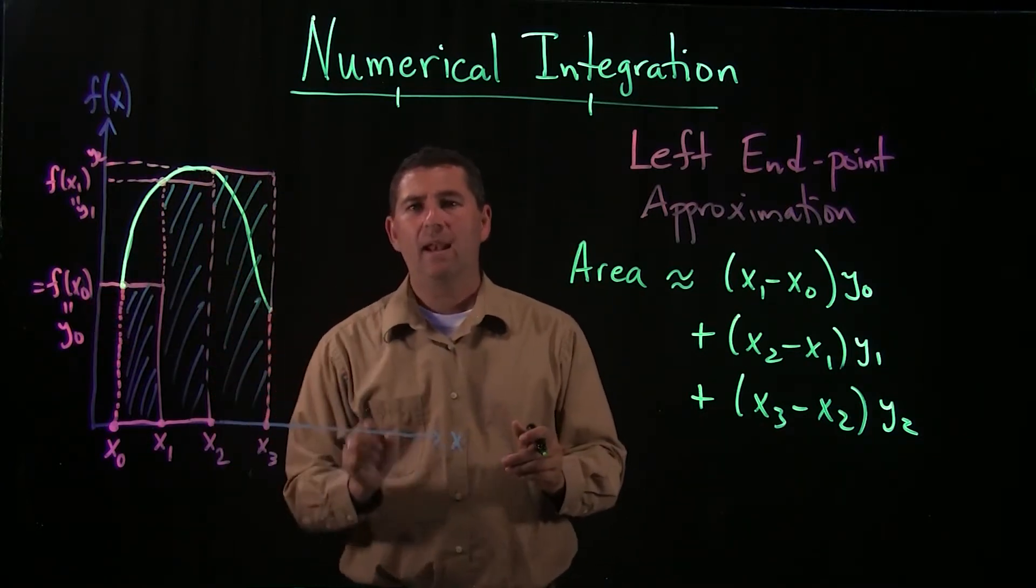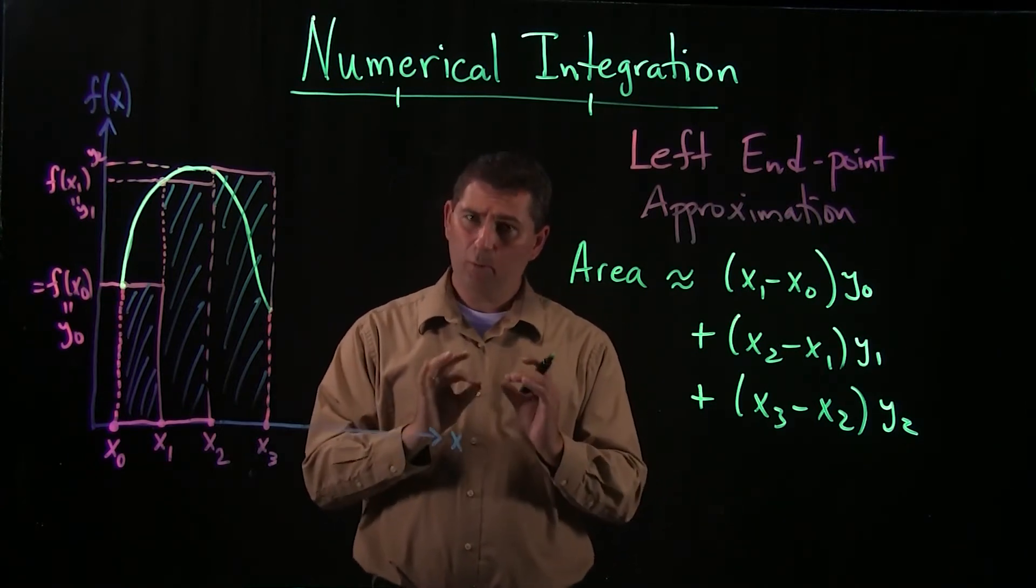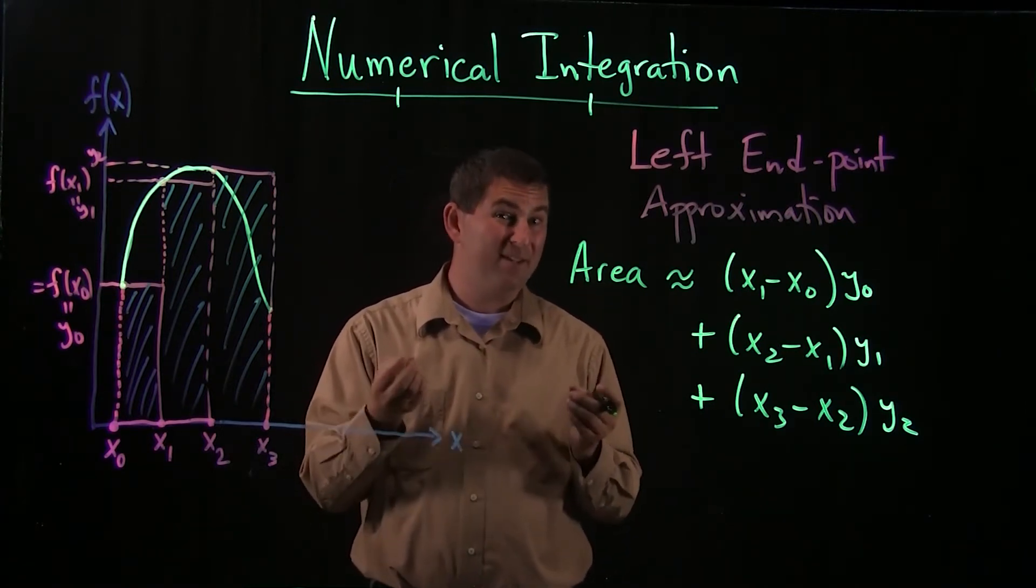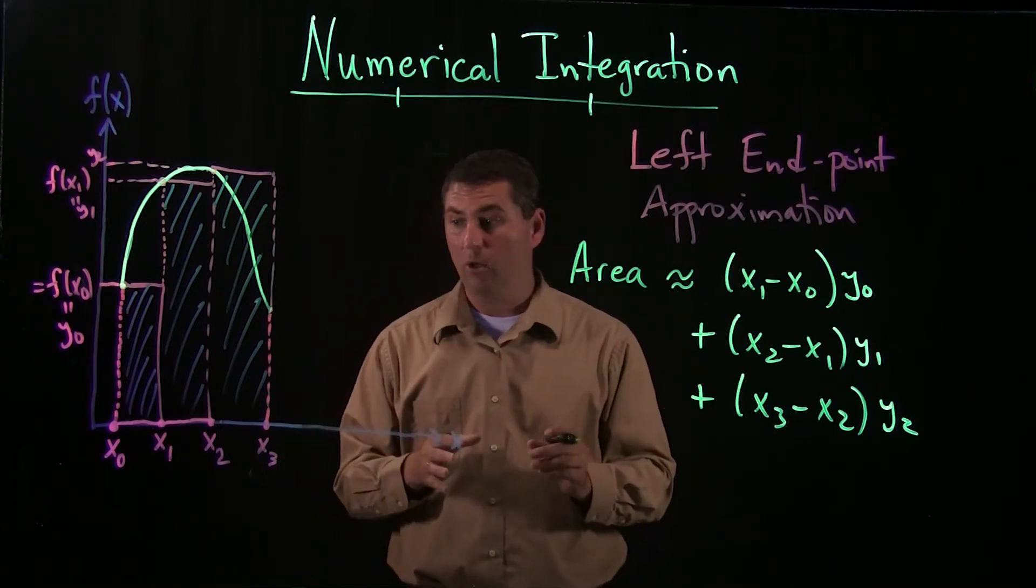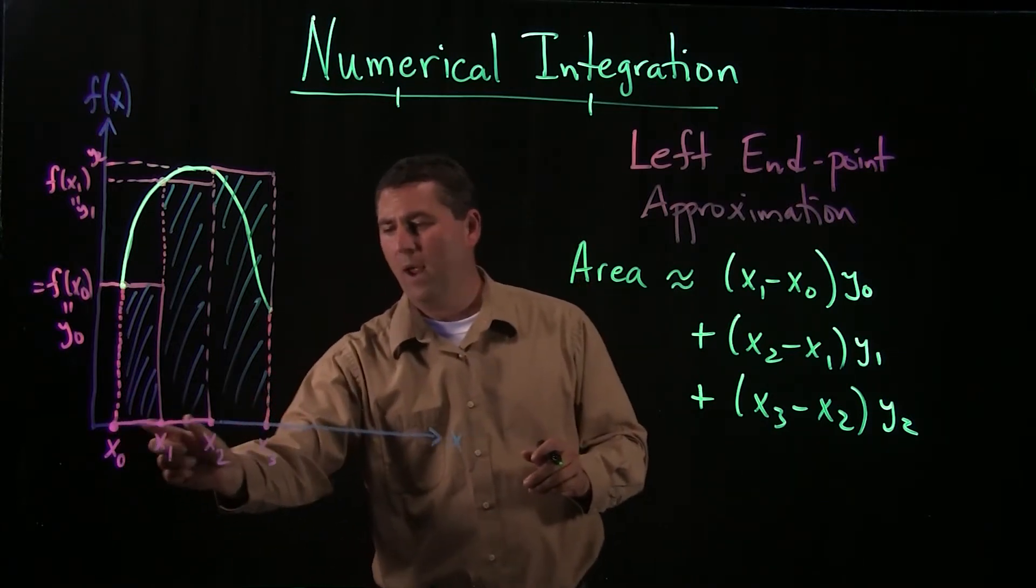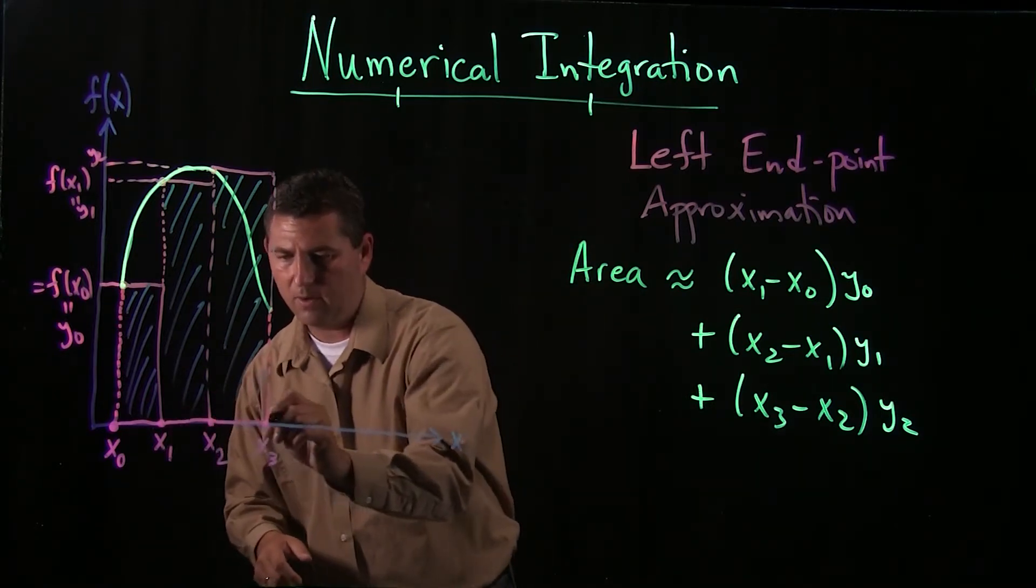So, but this is how we can do it. Now, we're going to make one simplification to make our life easier. This isn't required, and in the real world sometimes you can't do this, but for our purposes this will be close enough. We're going to assume that when we subdivide the interval, x0 to x1, x1 to x2, x2 to x3, that all of these have the same length.